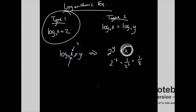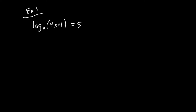Anything that makes a zero or a negative number attached to a logarithmic function doesn't exist. When we solve logarithmic equations, we always check our solutions to see if plugging them in gives zero or a negative. If so, it's not a solution — it has to be positive when plugged back in.